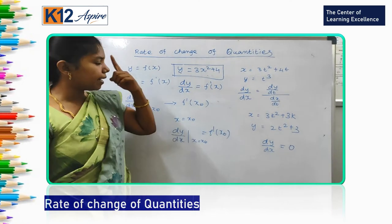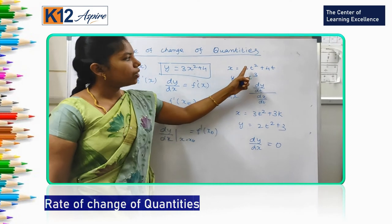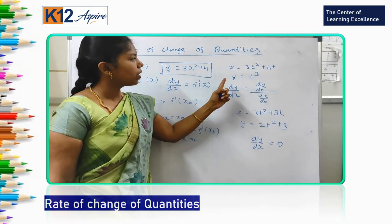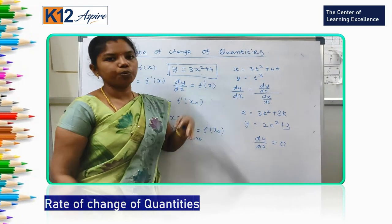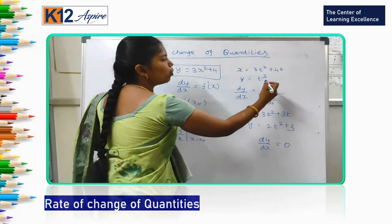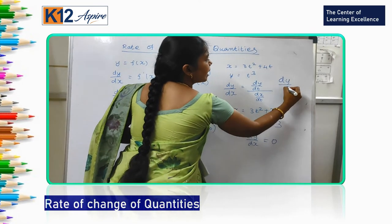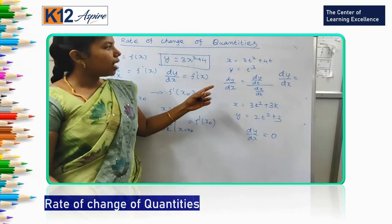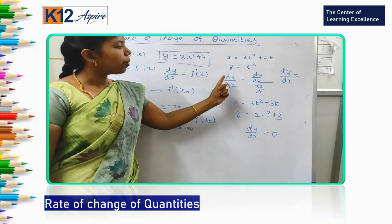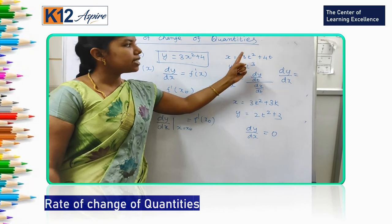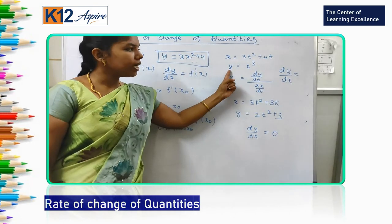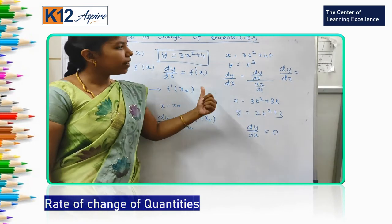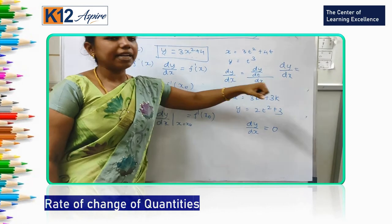Now we see here x equal to 3t square plus 4t, y is equal to t cube. Now we want to know dy by dx. Can we do? Yes, we can do. Because x depends on t, y also depends on t, so we can derive dy by dx.